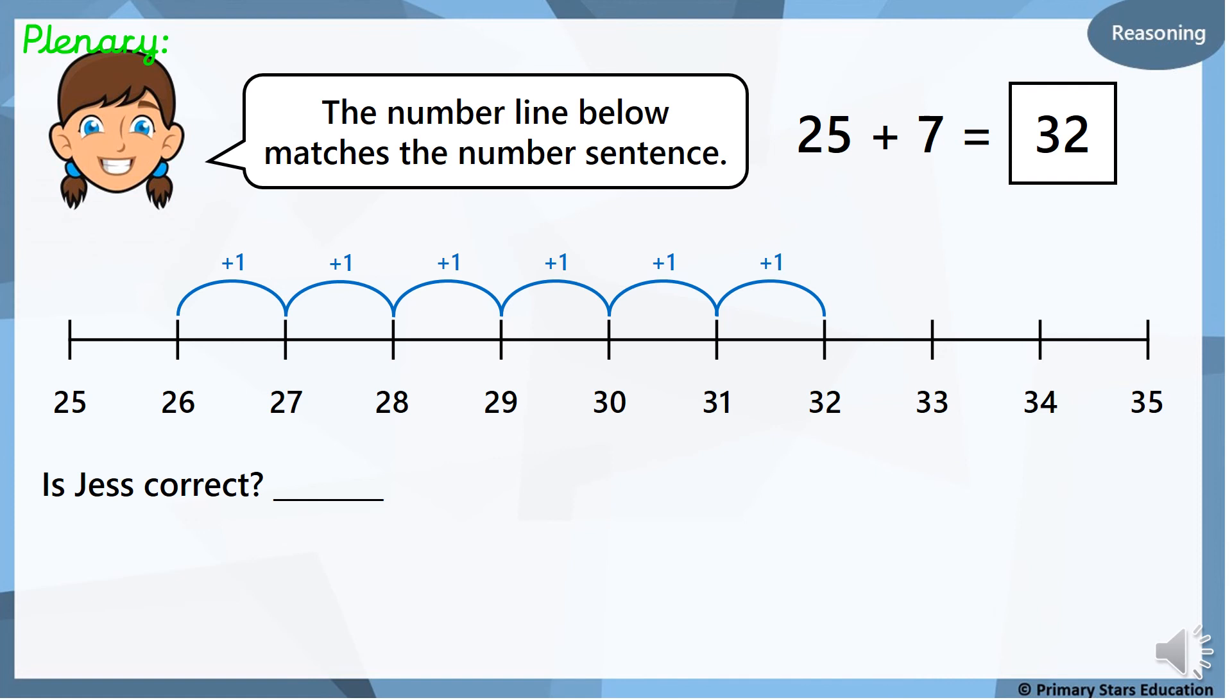Right, we're going to finish our lesson today with the plenary. So somebody's had a go. And they say the number line below matches the number sentence. 25 add 7 equals 32. And this person is Jess. Is Jess correct? Has she done it right? Pause the video to explain it to someone in your house and have a think. Has she done her calculation correctly?